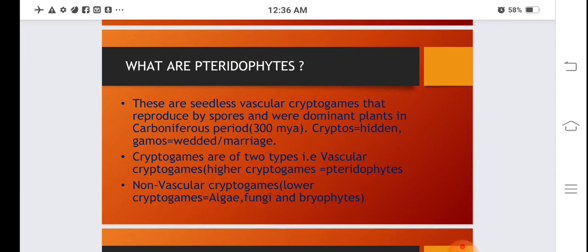Cryptogams are of two types: vascular cryptogams, which are known as higher cryptogams, are pteridophytes. While non-vascular cryptogams, which are known as lower cryptogams, are algae, fungi, and bryophytes. Vascular plants are divided into pteridophytes, which are primitive vascular plants with no seeds, and spermatophytes, which are seeded plants divided into gymnosperms and angiosperms.